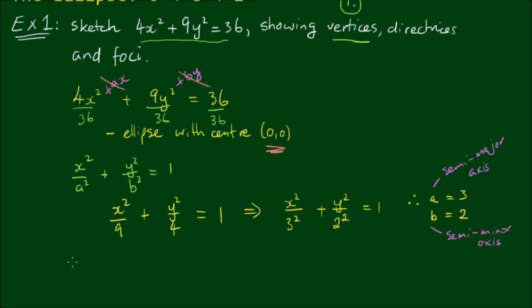So for the coordinates of the vertices, we have the x-intercepts at (a, 0) and (-a, 0). And for the y-intercepts, we have coordinates (0, b) and (0, -b), which equals (3, 0) and (-3, 0), and (0, 2) and (0, -2) respectively.